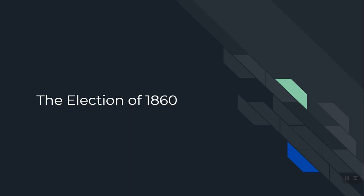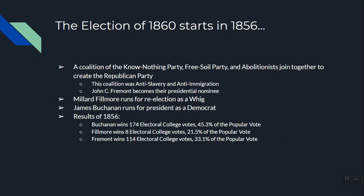The last topic is the election of 1860, which really starts in 1856. The Know Nothing Party — anti-Catholic and anti-immigration — the Free Soil Party, and abolitionists all joined together to form a brand new party: the Republican Party. John C. Fremont became the first presidential nominee of the Republican Party. The current president, Millard Fillmore, ran for re-election as a Whig, and James Buchanan ran as a Democrat. Buchanan won with 174 electoral college votes, Fremont got 114, and the sitting president Millard Fillmore got only eight — one of the worst defeats of a sitting president in American history.